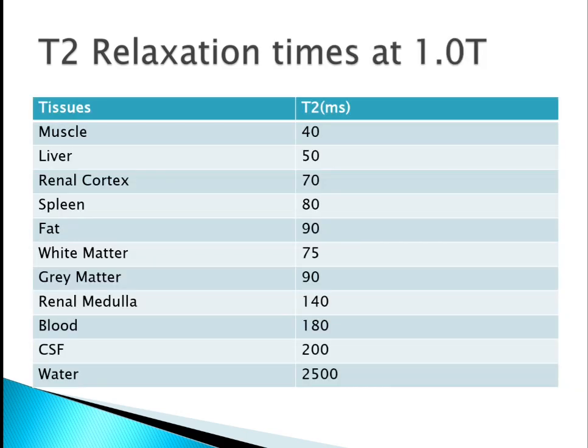The T2 relaxation times for various tissues at one Tesla are: muscle 40ms, liver 50ms, renal cortex 70ms, spleen 80ms, fat 90ms, white matter 75ms, gray matter 90ms, renal medulla 140ms, blood 180ms, CSF 200ms, and water 2500ms. Notably, for both T1 and T2 the value of water is the same: 2500ms.